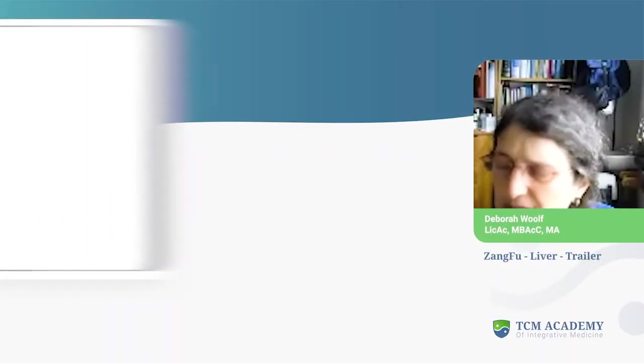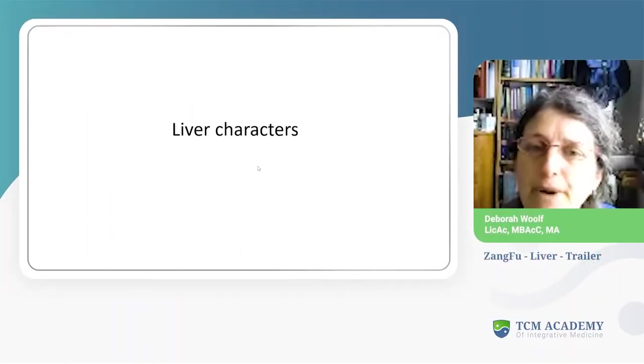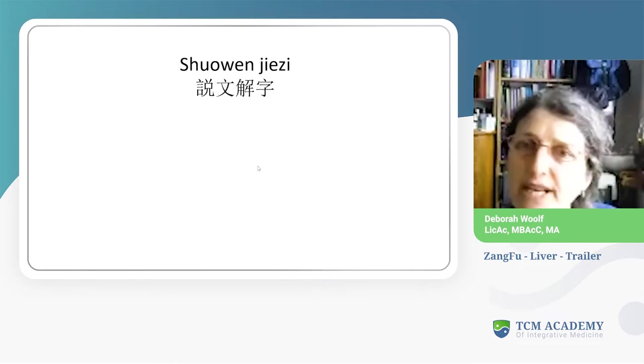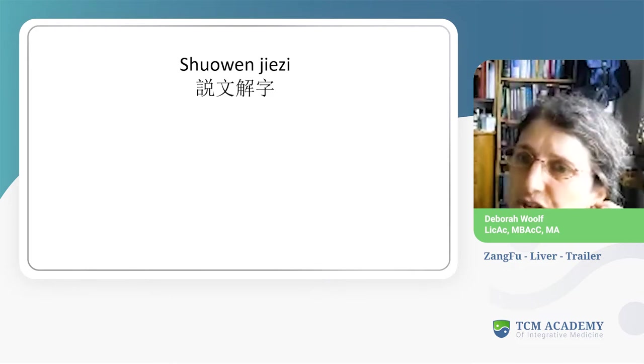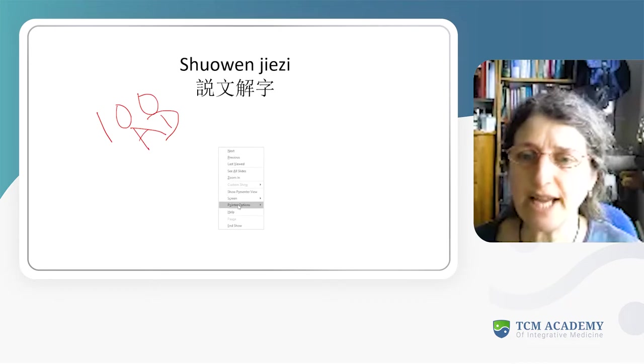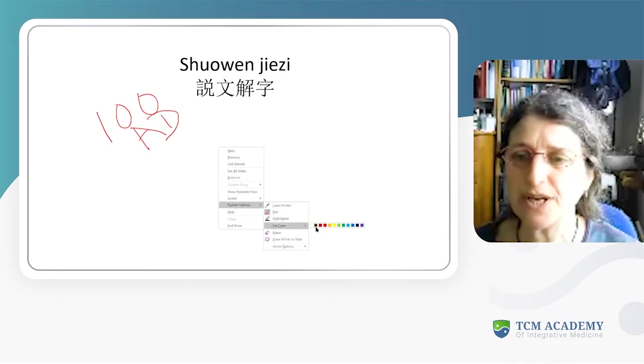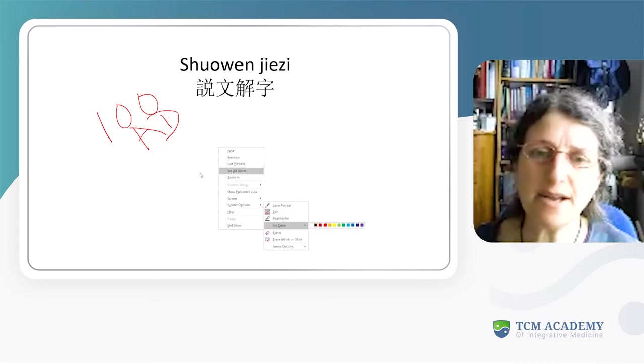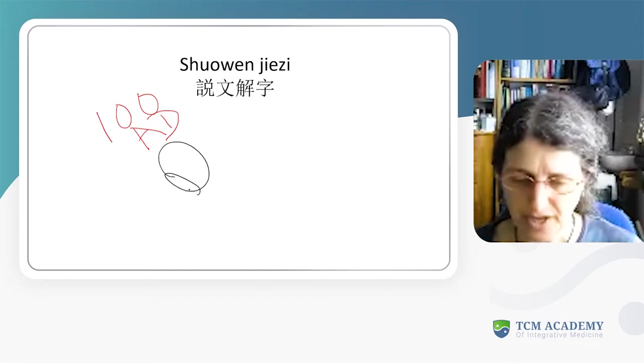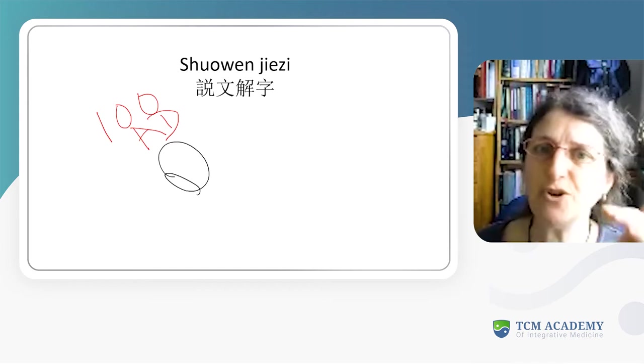I'm going to start with liver characters. First, I need to tell you about this - this is a dictionary written in 100 AD. It's a bit weird because basically what happened was that the amazing thing about Chinese culture is that they've used the same characters for 3000 plus years.